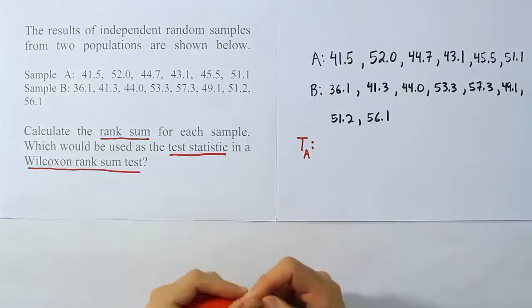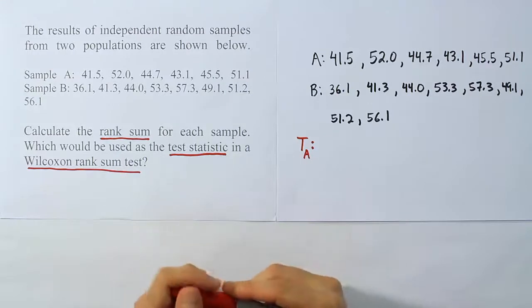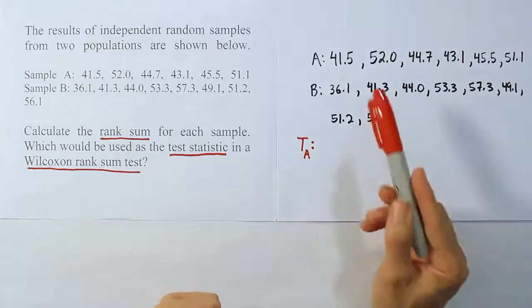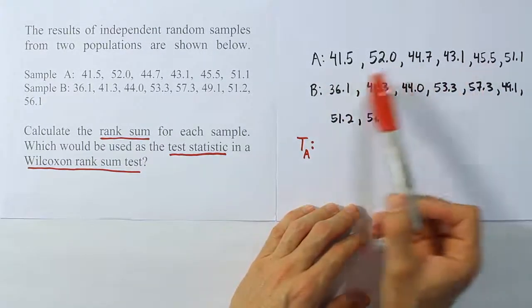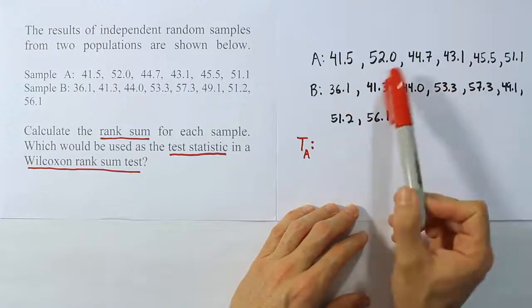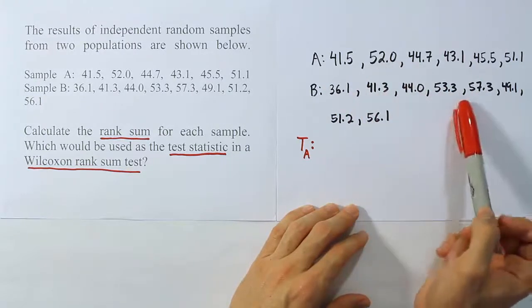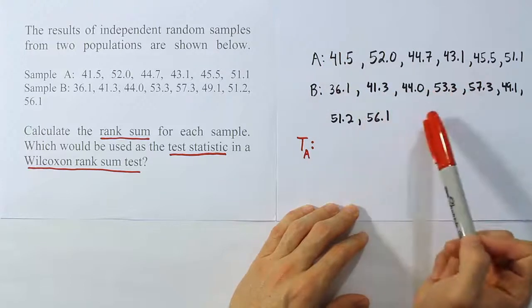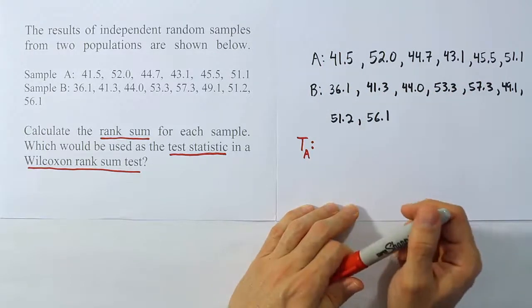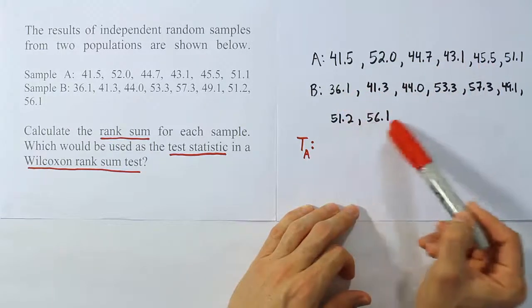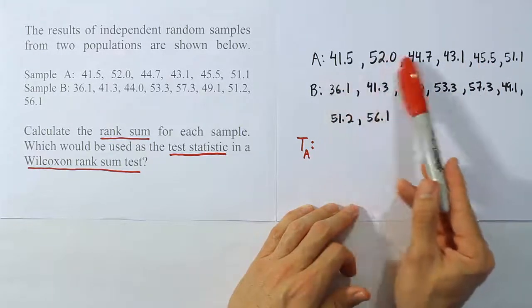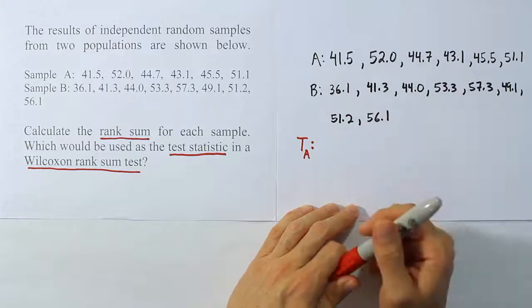Of course, if they're tied, it doesn't matter which one you use. You can use either TA or TB. But the rank total for A will be our test statistic. Let's go through and try to rank the values now. When I look at these, I'm going to say what's the smallest number? We're going to do the ranking as if the entire set of data, both samples, was all just one data set. Instead of being from two different places, we'll treat it as if it's all one giant data set, rank it, and then we'll go and separate them at the end and total the ranks for each sample separately.